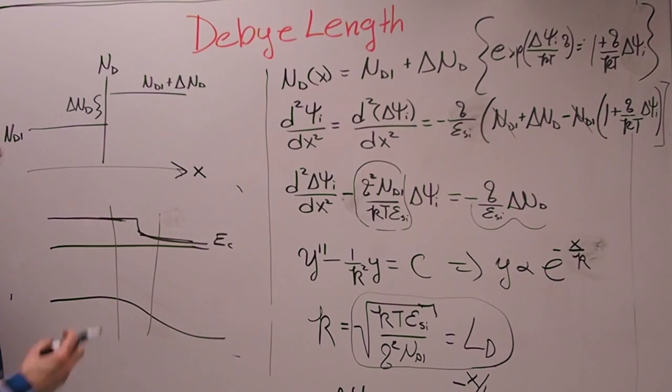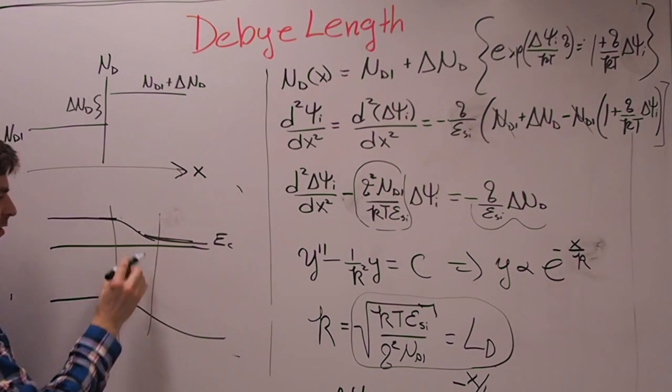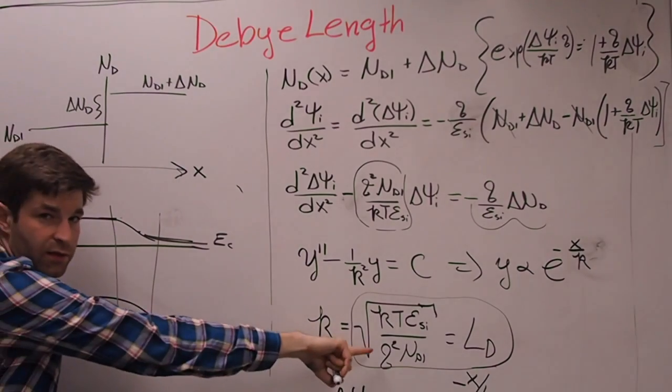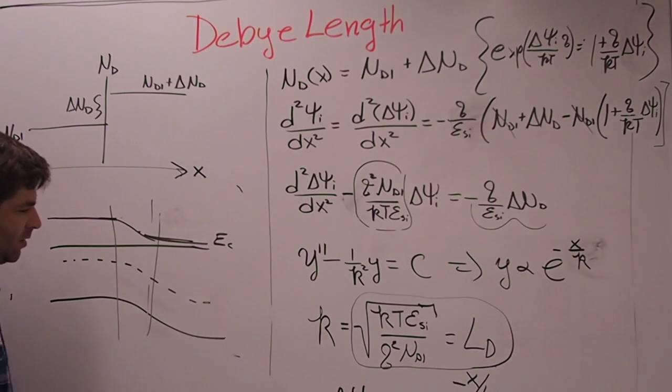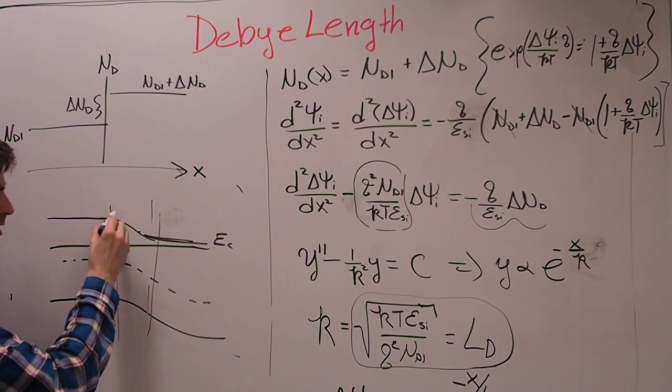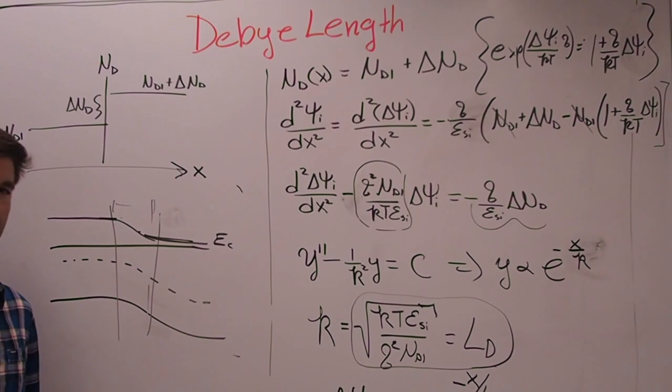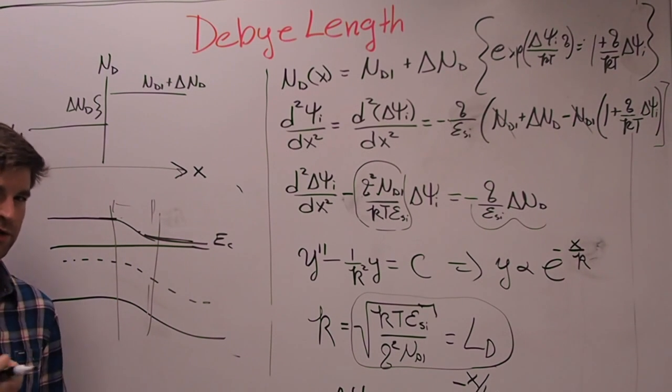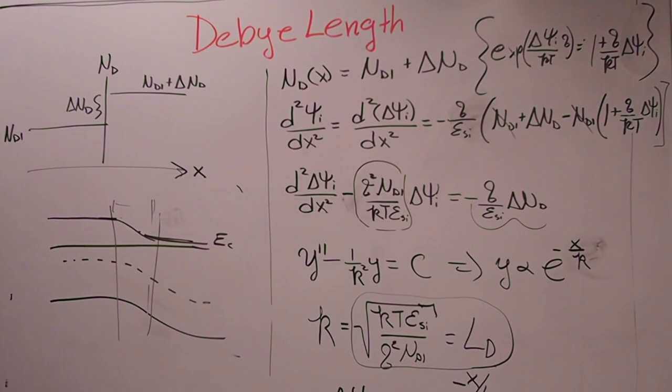And the question you should be asking, why doesn't it just go from here and then drop down like that? Well, it's because of the Debye length. It's because of this mini depletion region, this very small area, this distance right here, where it's completely depleted of free carriers.